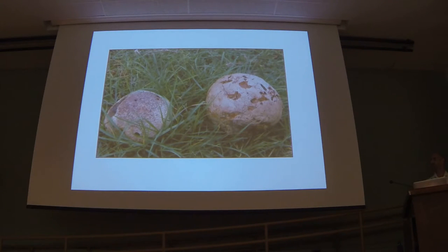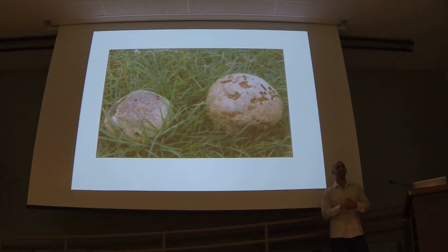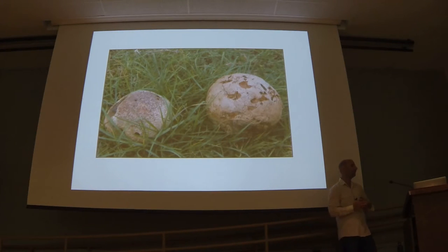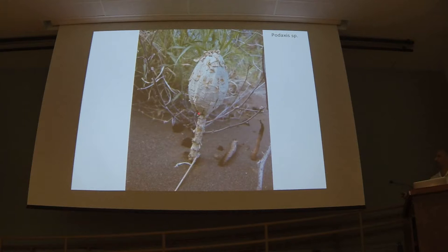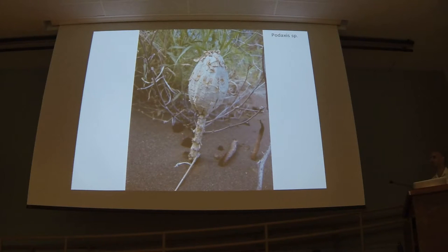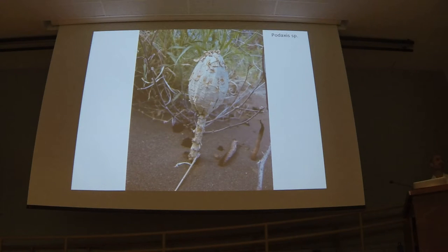This is a puffball — a Calvatia. We don't find these real commonly in Hawaii, but they can get to soccer ball size. It's a mushroom that's evolved to have its gills on the inside — a completely self-contained ball of spores. What we do have in Hawaii is Podaxis, a stalked puffball. Imagine a puffball on a stalk — it grows in sand, right off the edge of the water, especially in dunes with some grass or coastal strand vegetation. Even in really dry places like Ka'ū on the south part of Big Island, these will pop up all over the place after a little bit of rain.